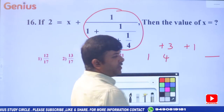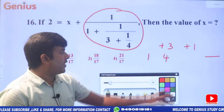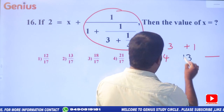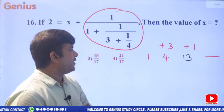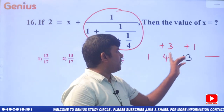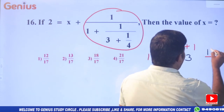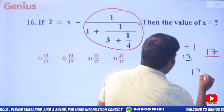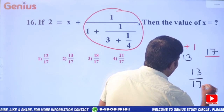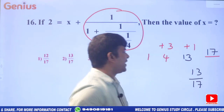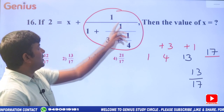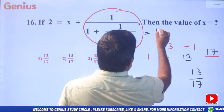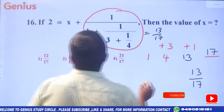4 threes are 12, plus 1 equals 13. Then 13 plus 4 equals 17. Final rounded answer: 13 by 17.